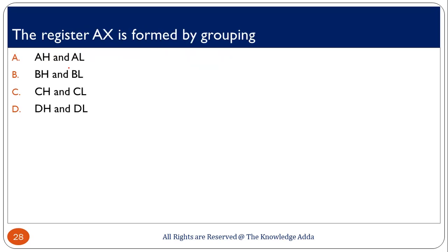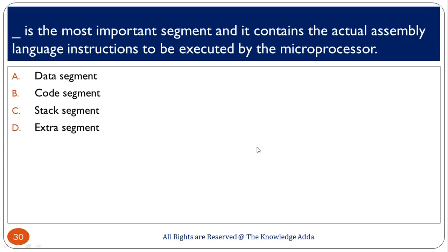The AX register is formed by grouping: the 8086 has four registers — AX, BX, CX, and DX — and every register is divided into two parts. AX is formed by AH plus AL, BX by BH plus BL, CX by CH and CL, and DX by DH and DL. The code segment is the most important segment, containing the actual assembly language instructions to be executed by the processor.